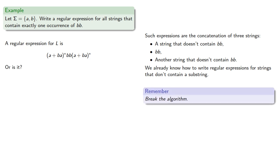So a good rule: break the algorithm. Is there any way that we could get more than one occurrence of BB from a regular expression like this?